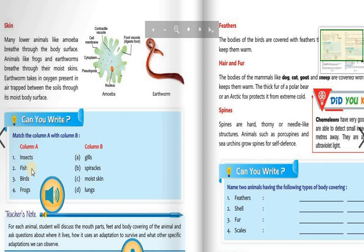Next you can see column A and column B. Insects use spiracles to breathe. Fish and all aquatic animals use gills. Birds use lungs, and frogs use moist skin to breathe, as we have just studied.